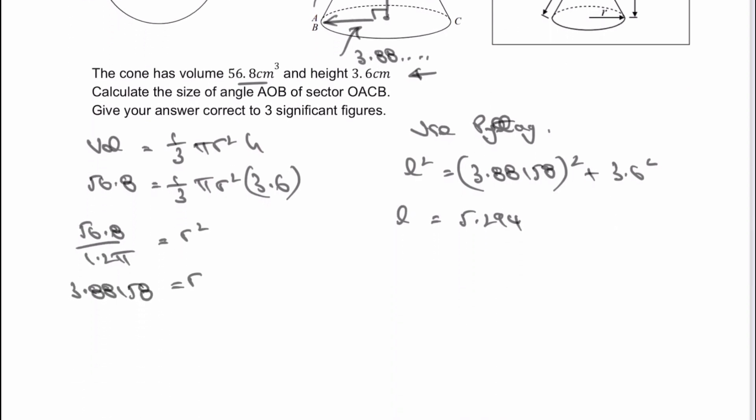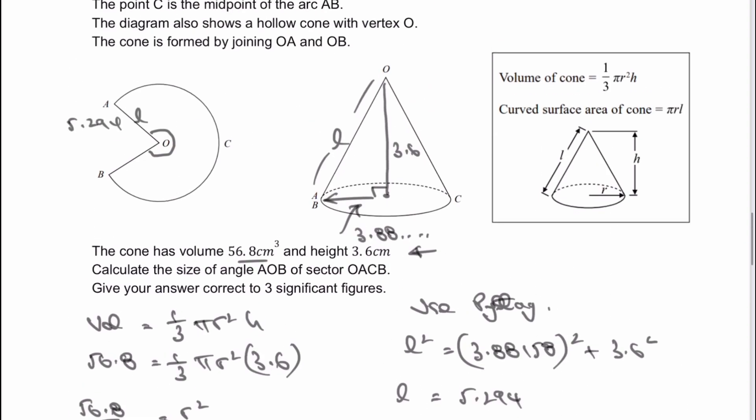So surface area is going to be equal to pi RL. The information we've got: we know pi, we know the radius because we've already worked it out, 3.88158, and that's going to be multiplied by the value of L, which we've just worked out as 5.294. When we put that into a calculator, we're going to get 64.557 centimeters squared. Now that 64.55 centimeters squared is going to be the area of this sector.